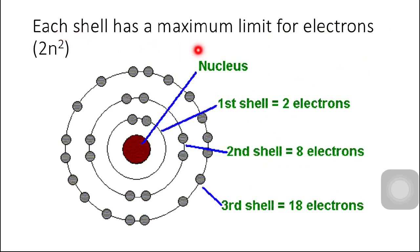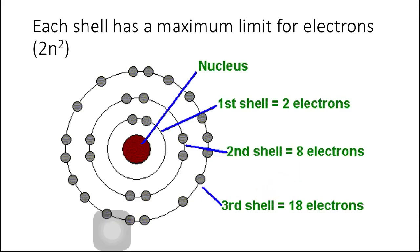Each shell has a maximum limit for electrons, and we can calculate it using the formula 2n². The first shell can hold a maximum of 2 electrons, the second shell can hold a maximum of 8 electrons, and the third shell can hold a maximum of 18 electrons. If we have a fourth shell, it can hold a maximum of 32 electrons.